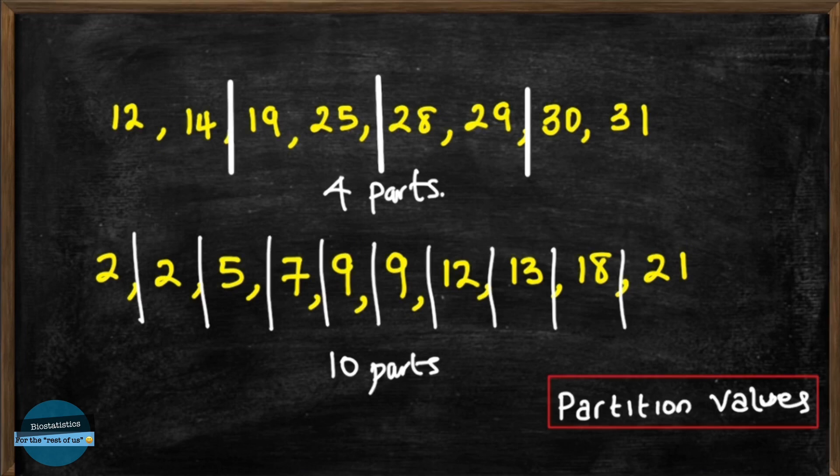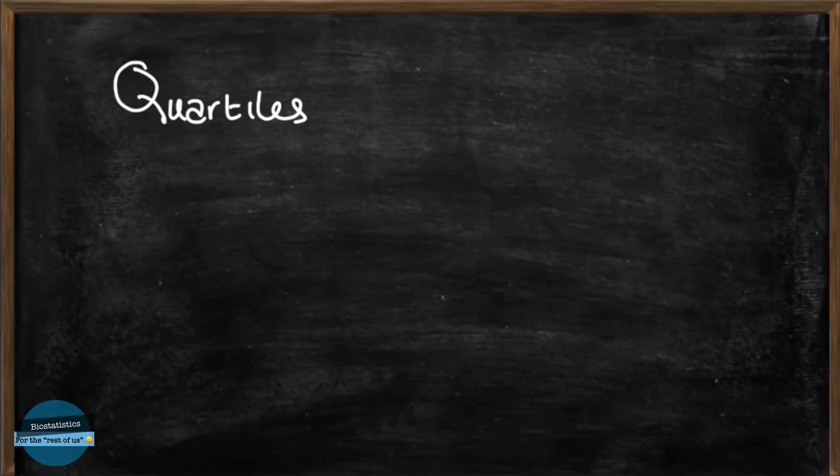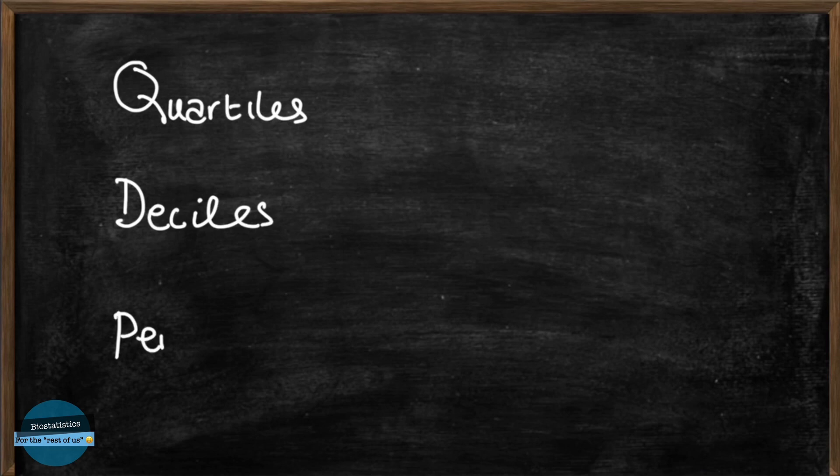then just like when we want to summarize numerical data, we end up using measures of central tendency as well as the measures of dispersion. Quartiles, deciles and percentiles are the most common partition values in use.